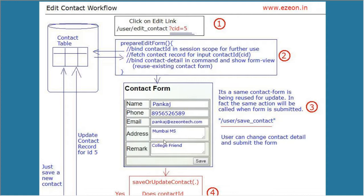When you have got the contact detail from the database, we will bind that detail to the command and then the command will be presented by the view. So this is the existing contact form I am going to reuse here, as we have used this form for the new record save operation. The same form I will reuse here, but this time I will bind the existing contact detail in my command and the data in the command will be presented in the form. In fact, my action will be the same.